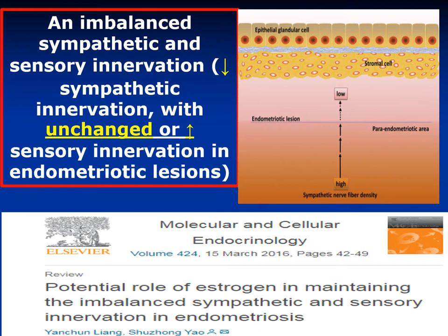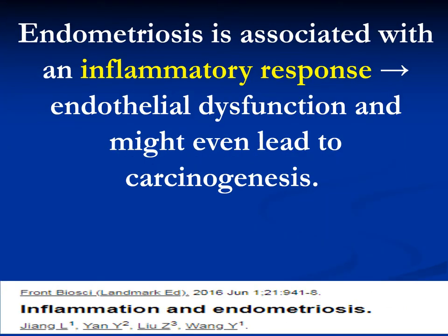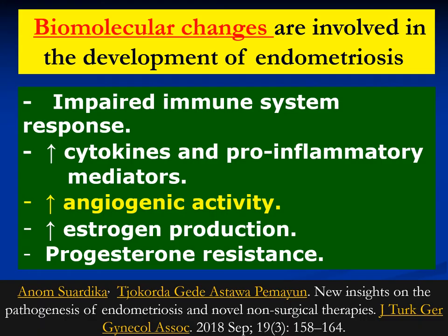Regarding defective innervation, there is an imbalanced sympathetic and sensory innervation of the tissues destroyed or affected by endometriosis. There is definitely an inflammatory reaction in cases of endometriosis, and this inflammatory response is responsible for endothelial dysfunction and might even lead to carcinogenesis later on. The biomolecular changes associated with endometriosis include impaired immune system response, increased cytokines and pro-inflammatory mediators, increased angiogenic activity, increased estrogen production, and progesterone resistance.